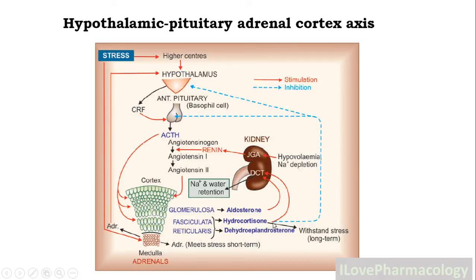Sodium is retained in exchange with potassium. Hydrocortisone has the same mechanism as aldosterone on the distal convoluted tubule, and one more action of hydrocortisone is that it helps in withstanding stress in the long term. Hydrocortisone is also responsible for a negative feedback mechanism — it inhibits the CRF release as well as ACTH release, thereby regulating the release of corticosteroids.